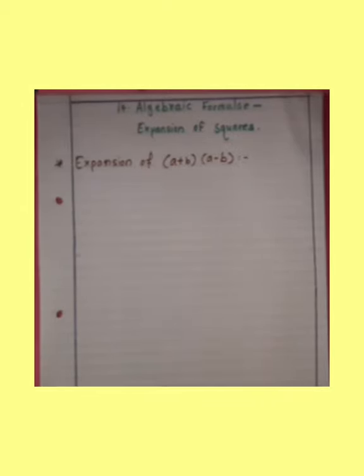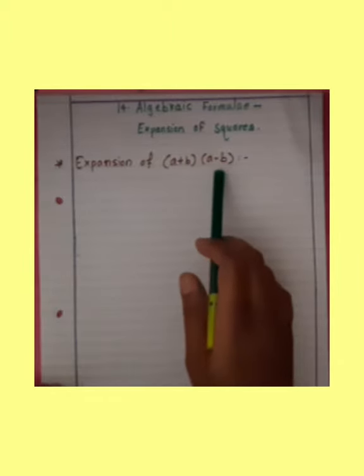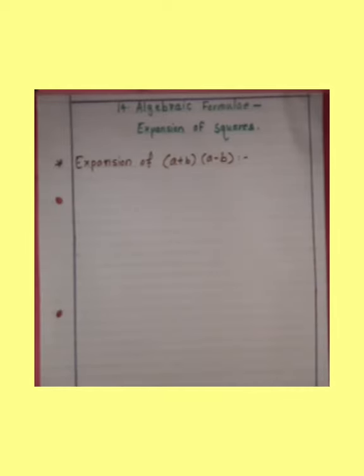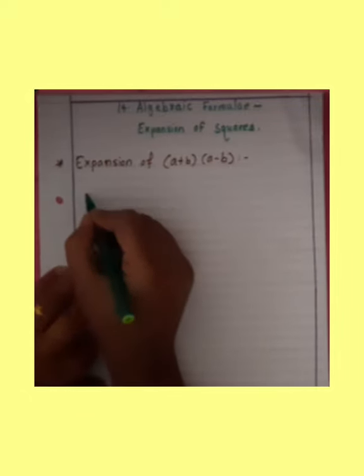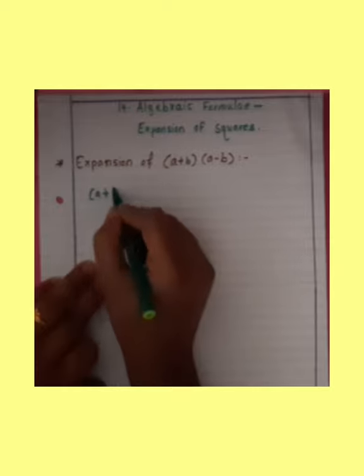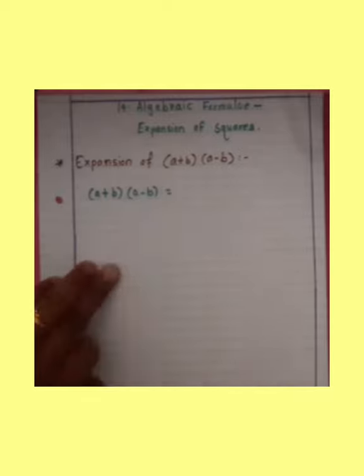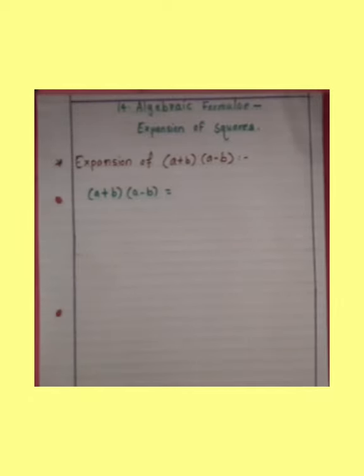Namaste, let's learn how to solve the expansion of a plus b and a minus b — that is, a plus b into another bracket a minus b. Look carefully, student: a plus b into another bracket a minus b is equal to a plus b into a minus b.